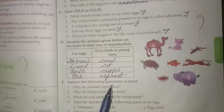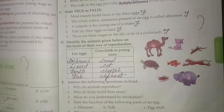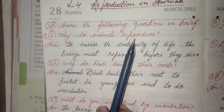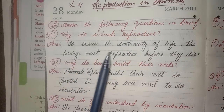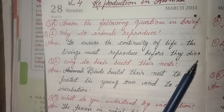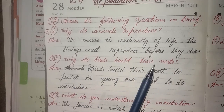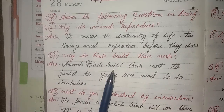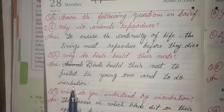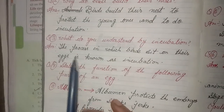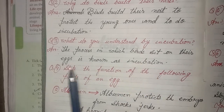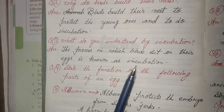Answer the following questions in brief. First question: Why do animals reproduce? Answer: To ensure the continuity of life, living beings must reproduce before they die. Second: Why do birds build their nests? Answer: Birds build their nests to protect the young ones and to do incubation. Third: What do you understand by incubation? Answer: The process in which birds sit on their eggs is known as incubation.